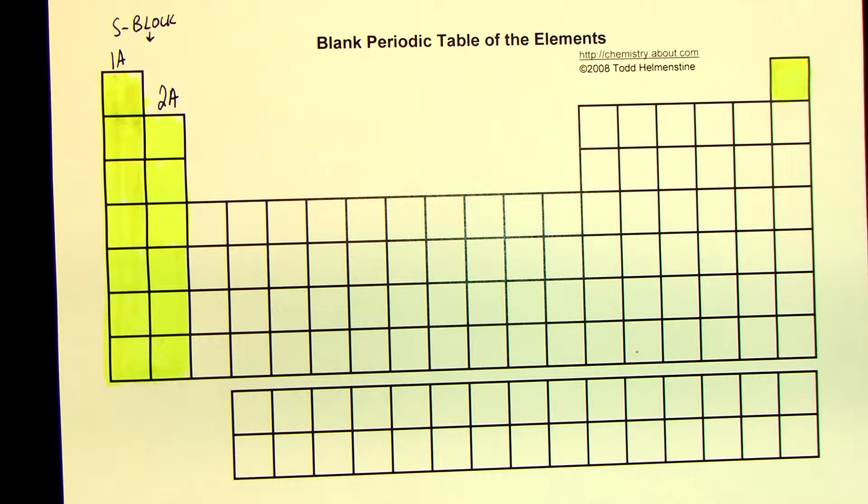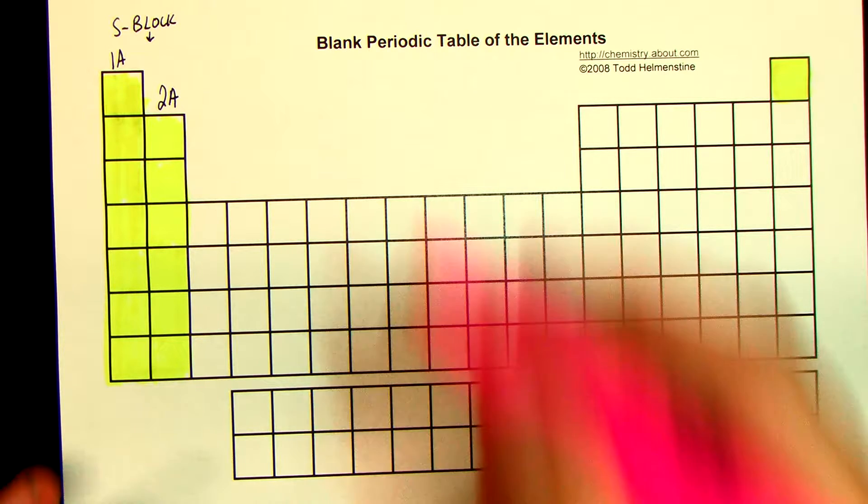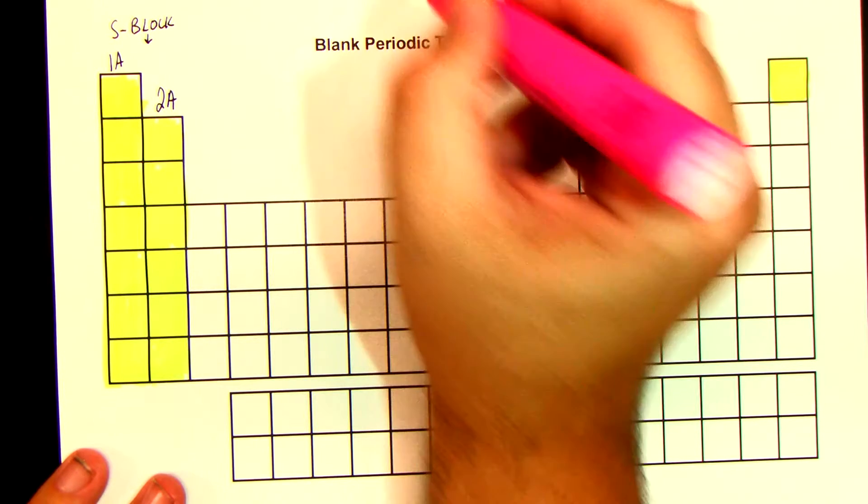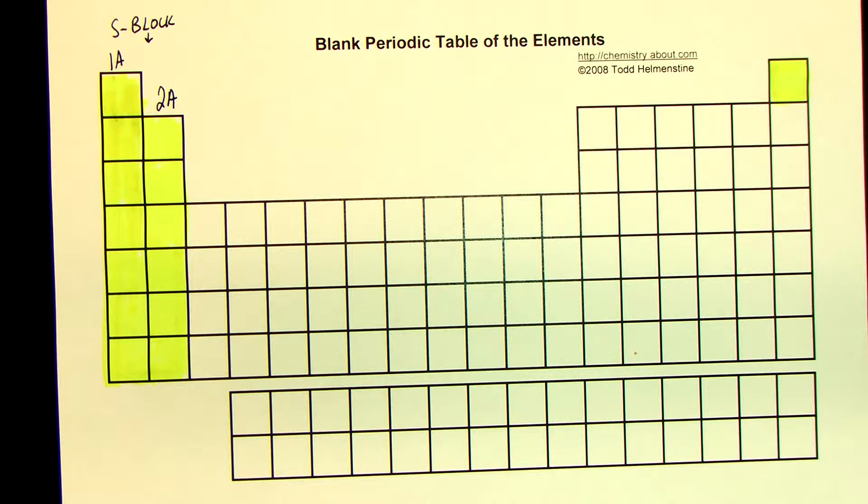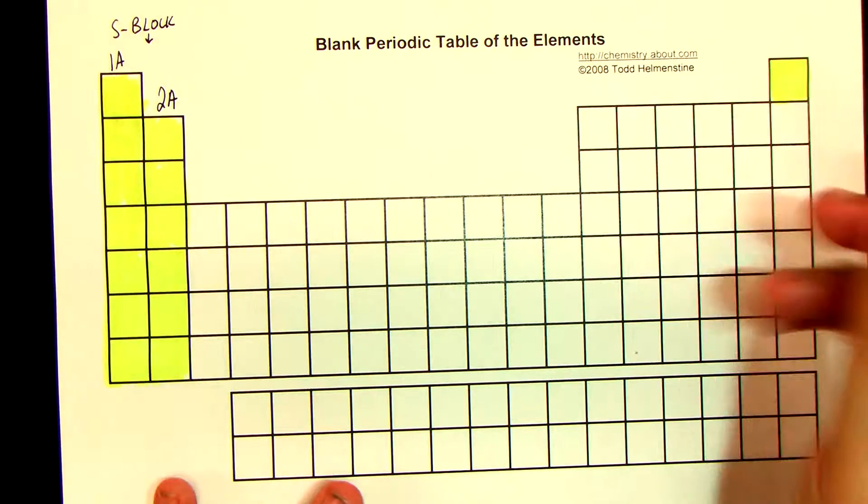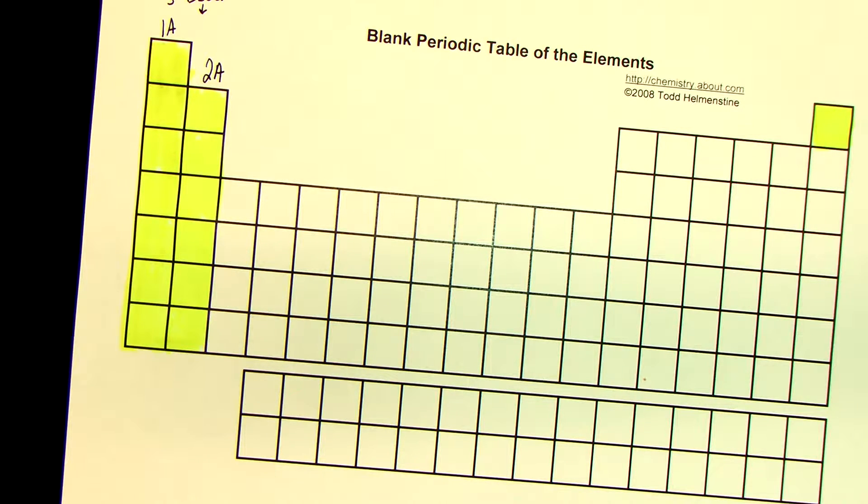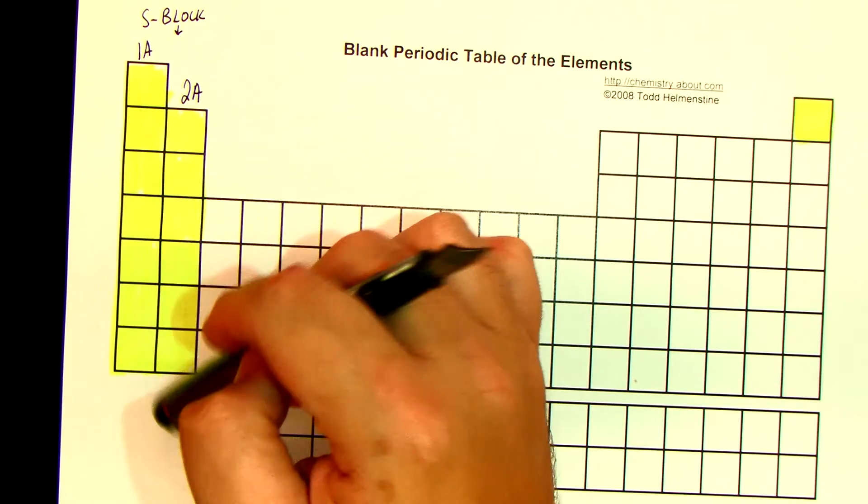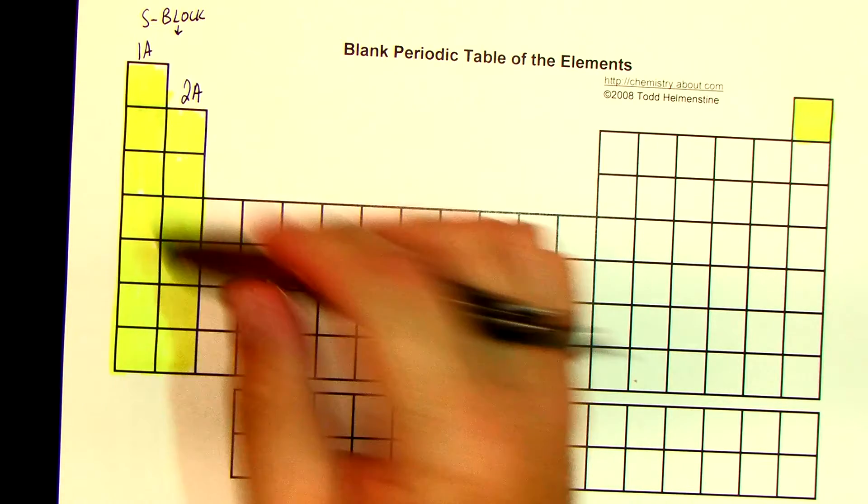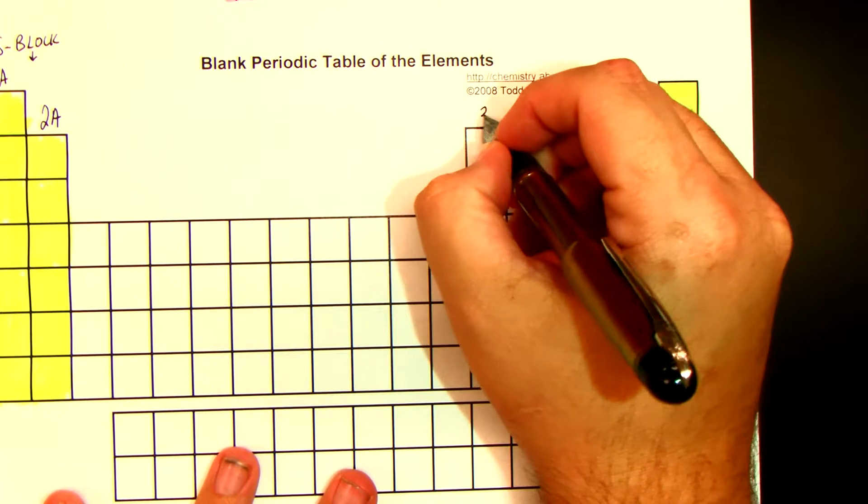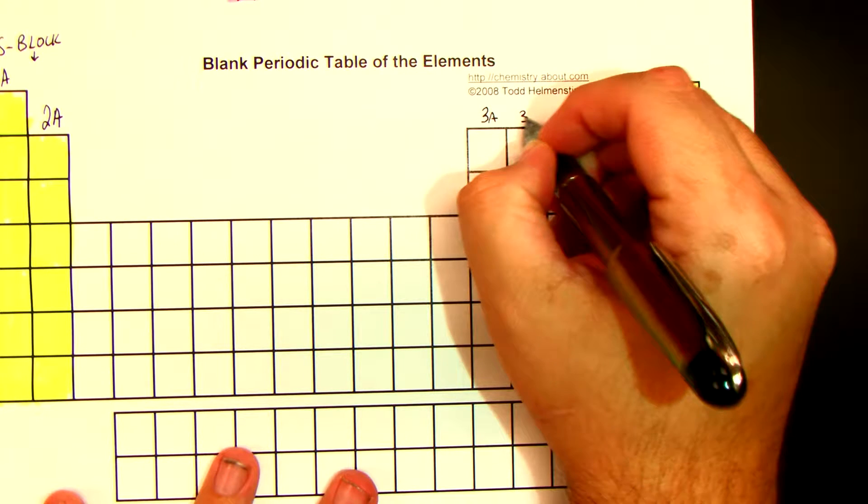Now, we're going to talk about P block. And P block, I'm going to use pink. Now, P block is all the way over to your right. And over here to the right... Well, first off, are we okay with S block? Everybody okay with the... That block is basically the first two columns. The columns are called groups. So it's the first two groups. Over here, this guy is 3A. This guy is 4A, not 3A.